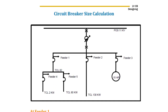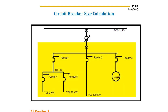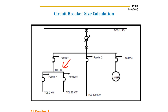Coming to the calculation of circuit breakers. Here is the SLD — Single Line Diagram or one line diagram. We are getting a supply of 11 kV from the substation. This is the primary side of a transformer. This is a distribution transformer, and this is the secondary side of the transformer. We have five feeders: Feeder 1, Feeder 2, Feeder 3, Feeder 4, and Feeder 5. We are going to find the size of circuit breakers for all five feeders.